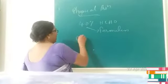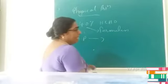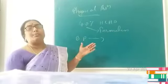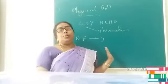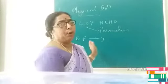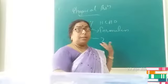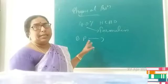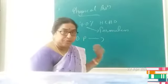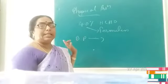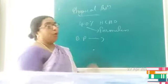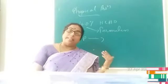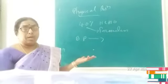Now considering the boiling point, the boiling points of aldehydes and ketones are higher than those of corresponding hydrocarbons due to the presence of dipole-dipole interactions. Since the C=O group is polar in nature, even though these interactions are relatively weak, they raise the boiling point above that of corresponding hydrocarbons.